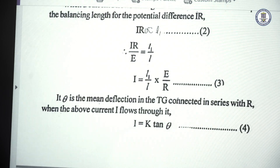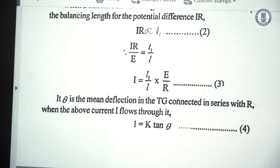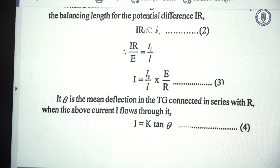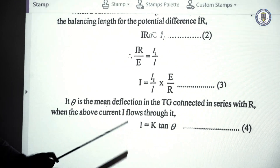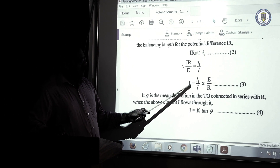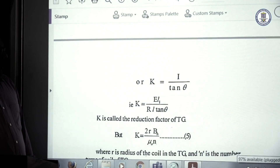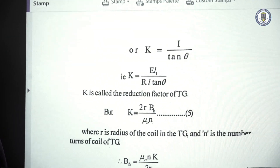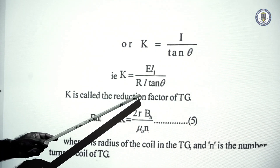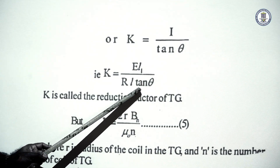Now if this current is passing through the tangent galvanometer and the deflection produced is theta, then we have the formula I = K·tan(θ) for the tangent galvanometer. Substituting I from equation 3 into equation 4, we obtain K = I / tan(θ), which gives K = E·L1 divided by R·L·tan(θ).